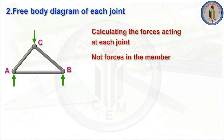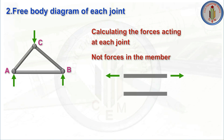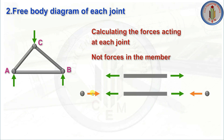So how do we determine whether a member is in tension or compression? Whenever pulling forces act on a member, we call it tension; whenever pushing forces act, we call it compression. As per Newton's law, for every action there is an equal and opposite reaction. If a member is in tension, it will exert a force on the joint acting away from the joint.